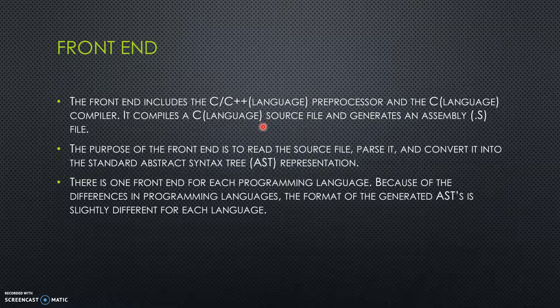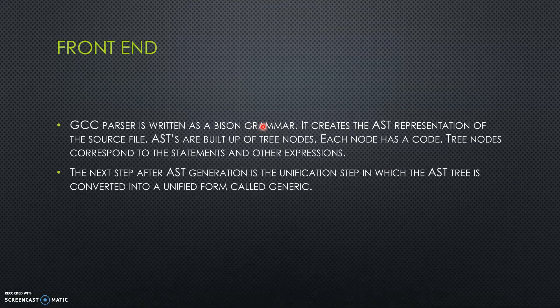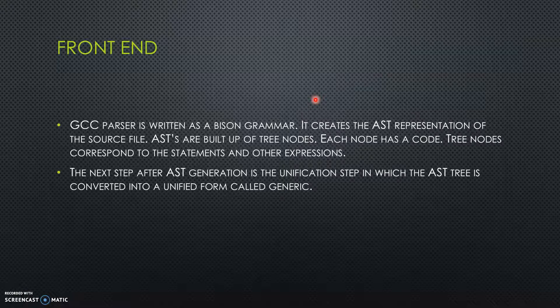The front-end includes the preprocessor and the compiler. It compiles the source file and generates an assembly file. The purpose of the front-end is to read the source file, parse it, and convert it into a standard abstract syntax tree representation. There is a different front-end for every single programming language because all programming languages have distinct structures. Each front-end converts the source code into abstract syntax trees. Because of the inherent differences in language, ASTs can be different for every language. The ASTs are then further converted to a representation known as Generic, which is the same for all languages and is not language dependent. GCC parsers are written using Bison grammar, which creates the AST representation.